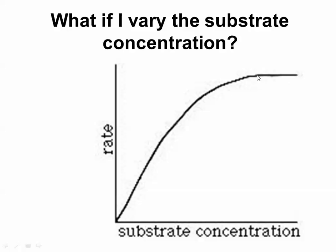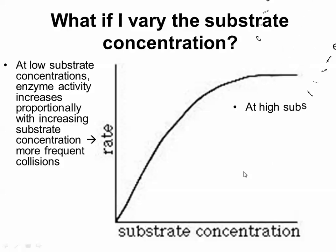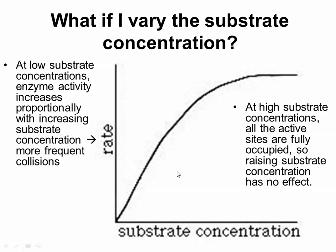So eventually you reach a limit, and that's because you have a constant concentration of enzyme that's actually there. So it's a relatively proportional increase that's going to happen here, and then at high concentrations, all the active sites are fully occupied, so raising the substrate concentration is not going to have a very significant effect.